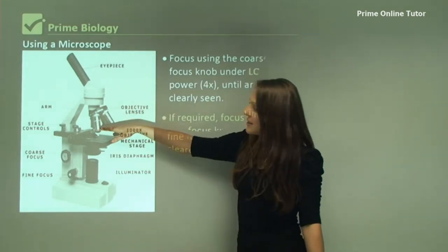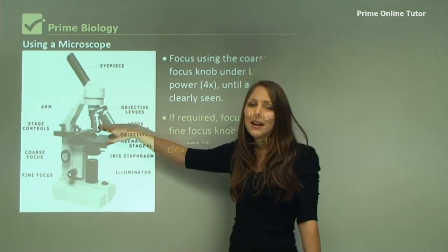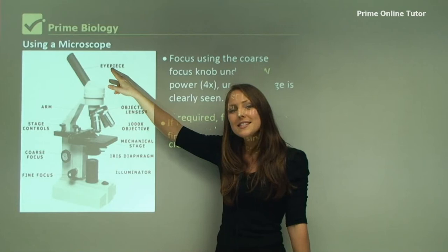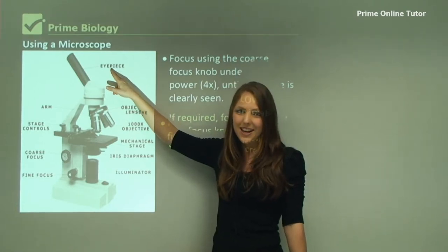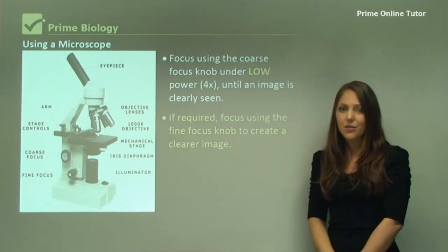When you're looking under these lenses, because it's 4x magnification, the total magnification is actually 40x. This is because the eyepiece lens is worth 10x magnification. So a total is 10 times 4, so it's actually 40x magnified.